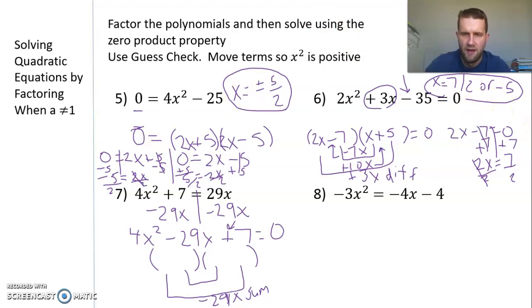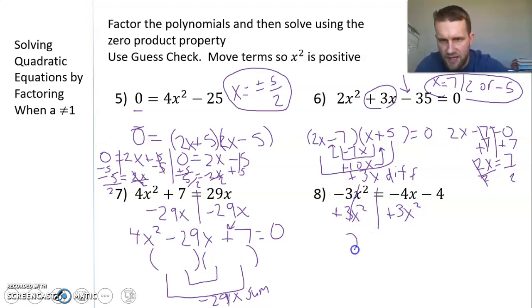For number 8, I see my x² term on the left side is negative. I want my x² to be positive, so I'm going to add 3x² to both sides of the equal sign. Write it in standard form: 0 = 3x² - 4x - 4. Then set up guess-check because there's no GCF and factor that out. Hopefully you can finish those up. If you're doing that, you're in good shape. Good luck with your factoring and solving. Stay in touch, and we'll see you soon.